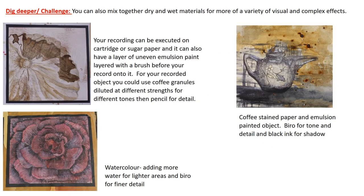You may want to challenge yourself further by mixing dry and wet materials for more variety of visual and complex effects. The mushroom drawing, for example, can be done on cartridge or sugar paper with a layer of uneven emulsion paint in the background before you record onto it, giving a more textural, uneven background. For your recorded object, you could use coffee granules diluted to different strengths for different tones, then pencil for detail. The zoomed-in close-up flower was done using watercolour — adding more water for lighter areas — and biro for finer detail.